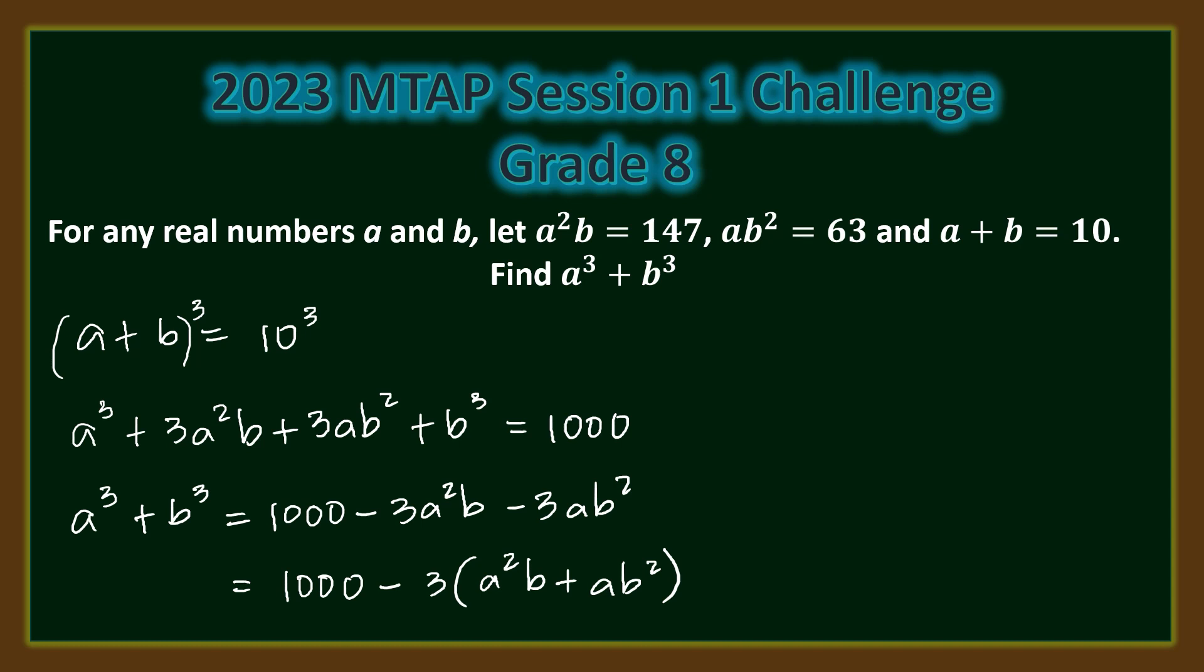So if we substitute these values, we'll get a cubed plus b cubed equals 1000 minus 3 times 147 plus 63. So we have 1000 minus 3 times 147 plus 63 is 210.